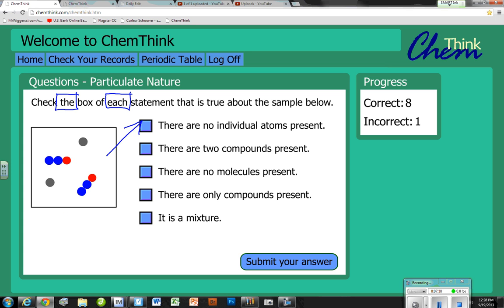Check the box of each statement that is true about the sample. We're looking for stuff that is true. 'There are no individual atoms present' - I beg to differ. That's an individual atom, that's an individual atom. I get to rule this one out. 'There are two compounds present' - this is a compound with two blues and a red, this is two blues and a red, so they're the same kind of molecule. That means there's no two compounds, so this guy is gone. 'There are no molecules present' - I beg to differ, there are two molecules present here and here.